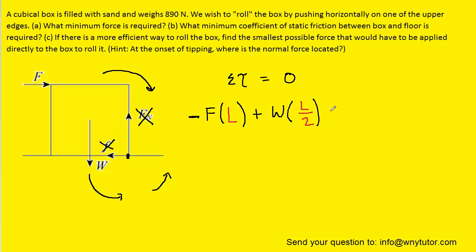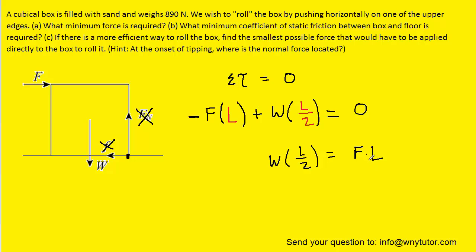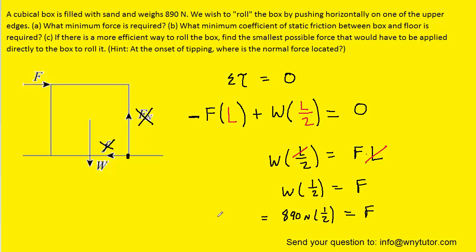We can set the torque equation equal to zero. Our goal is to solve for the force in Part A, so we add the term FL over to the right-hand side. Notice that L appears on both sides, so dividing both sides by L cancels it out, leaving one-half. Plugging in the known weight of 890 newtons, we determine the minimum force required to tip the box over, which comes out to 445 newtons. This is the correct answer to Part A.